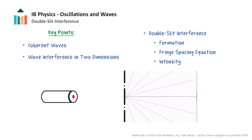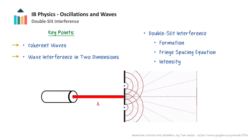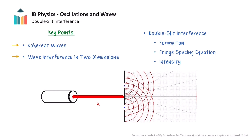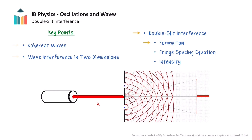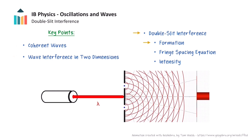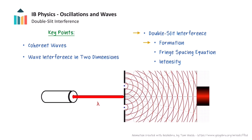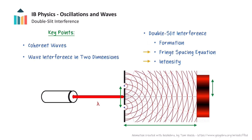This video will introduce the phenomenon of double slit interference. We will start by defining coherent waves and show how waves interfere in two dimensions. Afterwards, we will talk about the experimental setup used to produce an interference pattern from a double slit, and move on to explore the properties of the double slit interference pattern.